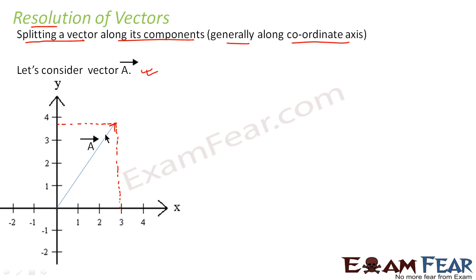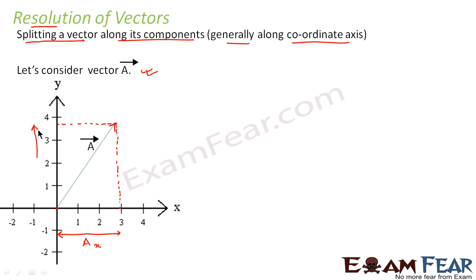The component of a along the x-axis is given by this length — this length determines the component of a along the x-axis, so this is ax. Similarly, the component of a along the y-axis, given by this length, is nothing but ay — that is the component of a along the y-axis.